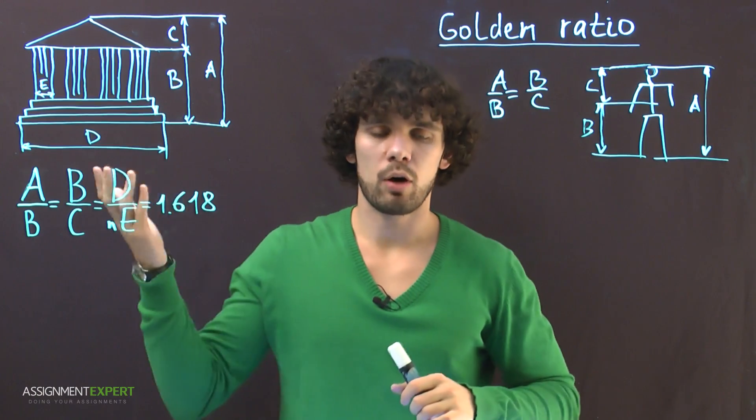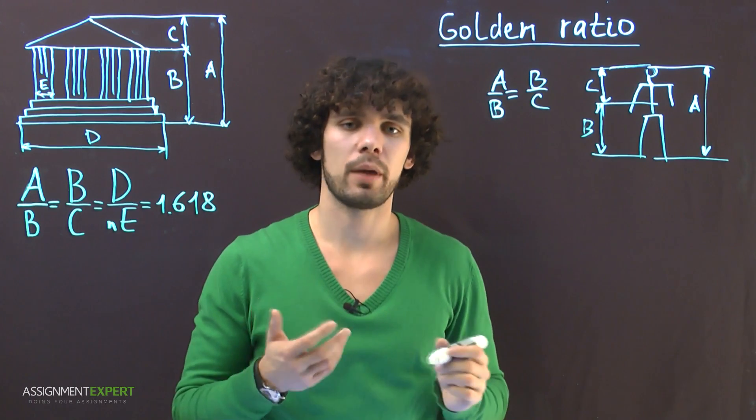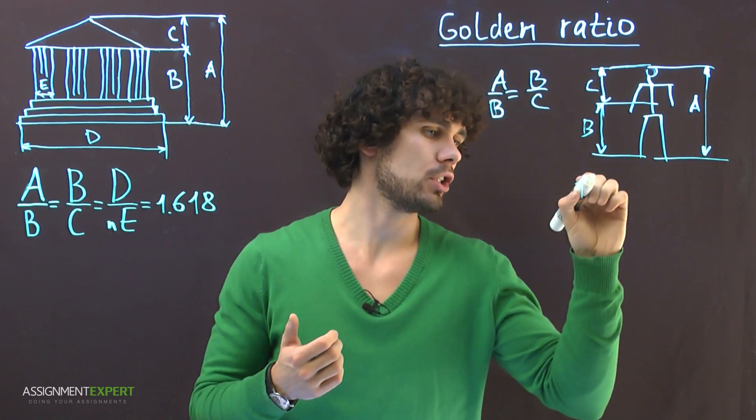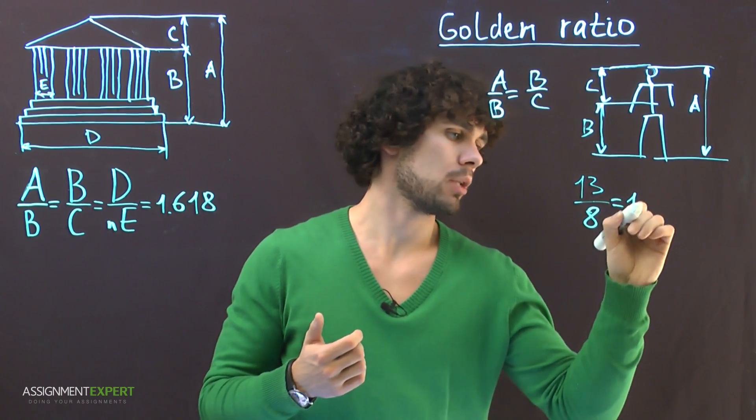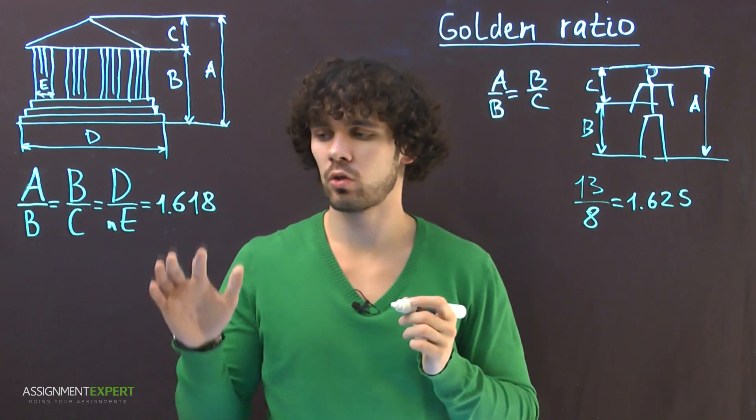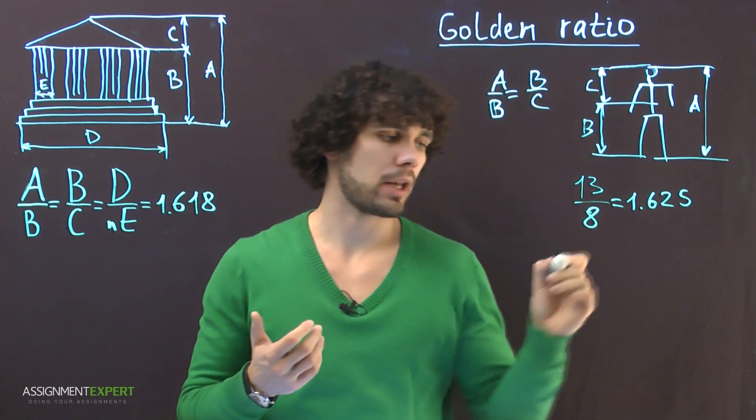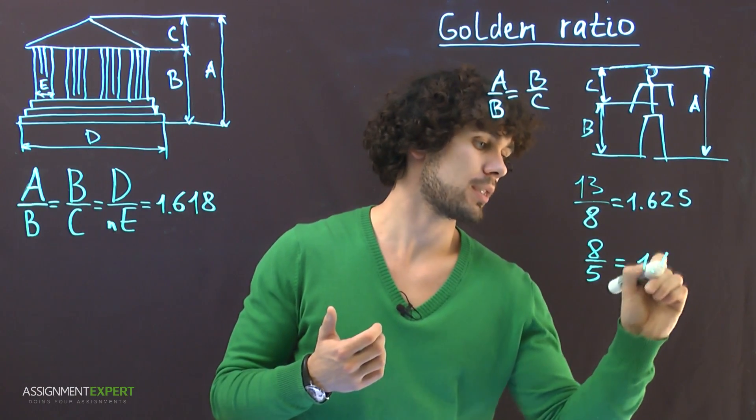This is similar to the Parthenon temple we discussed earlier. So he found out that proportions of a male body is 13/8, which gives us 1.625, and it's a little bit closer to the golden ratio than proportions of a female body, 8/5, which gives us 1.6.